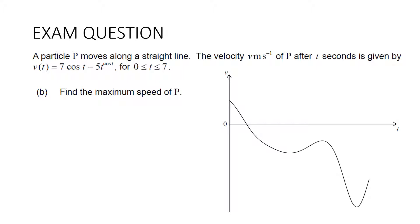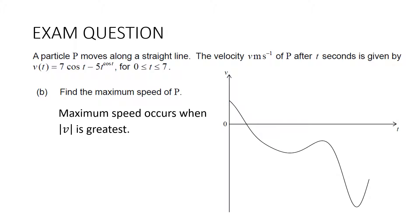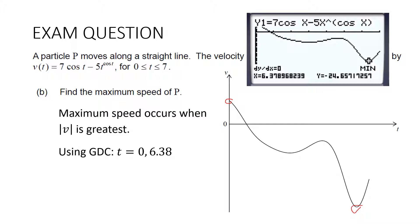Find the maximum speed of P. This is a trick question — speed is only ever positive. Maximum speed occurs when the absolute value of velocity is greatest, which could be at the maximum or the minimum of the velocity graph. Since differentiating this function is horrendous and this is a calculator paper, use the GDC graph to find the minimum. The minimum occurs at t equals 6.4 with value negative 24.7. The absolute value 24.7 is larger than 7, so the maximum speed is 24.7 meters per second.